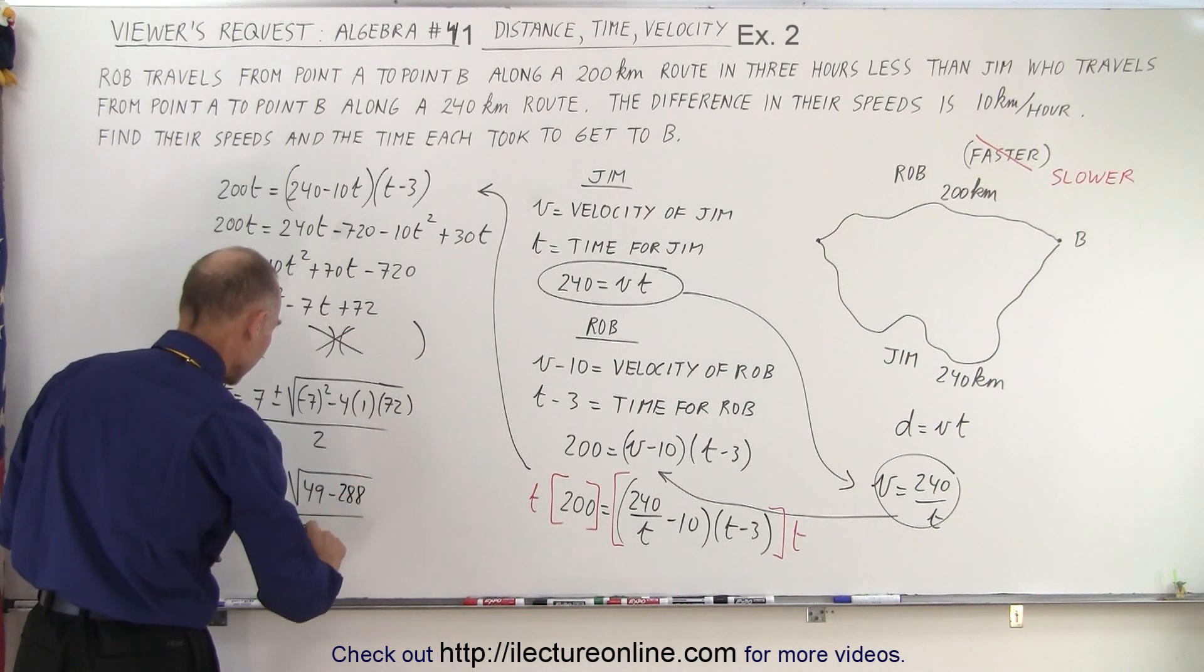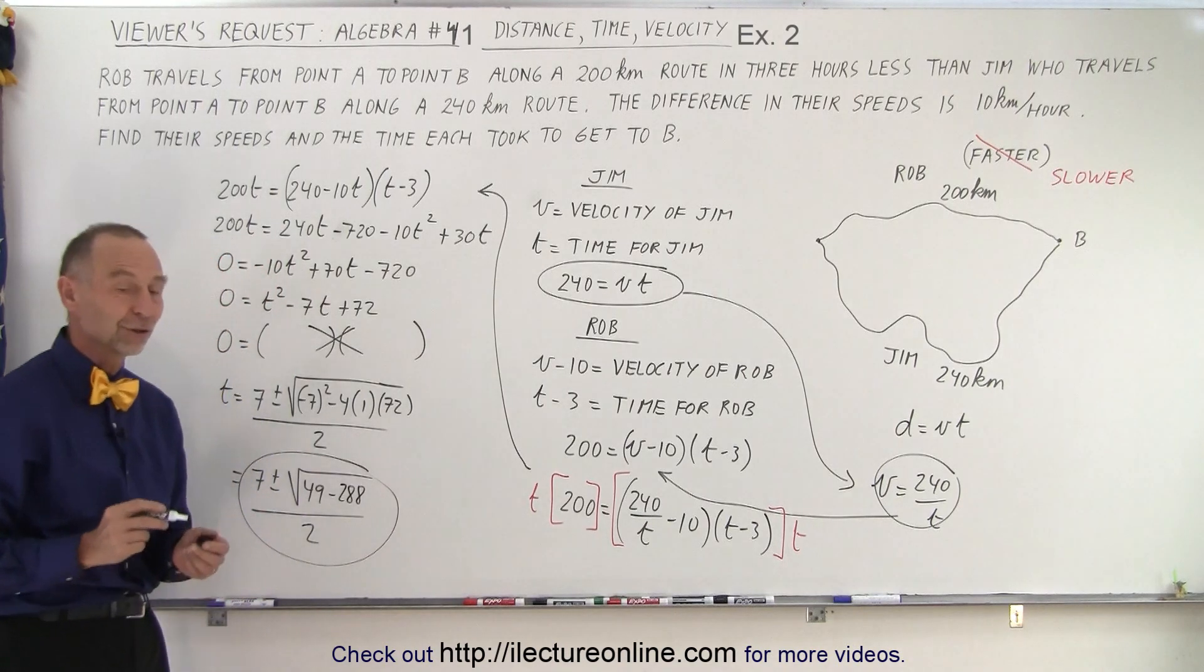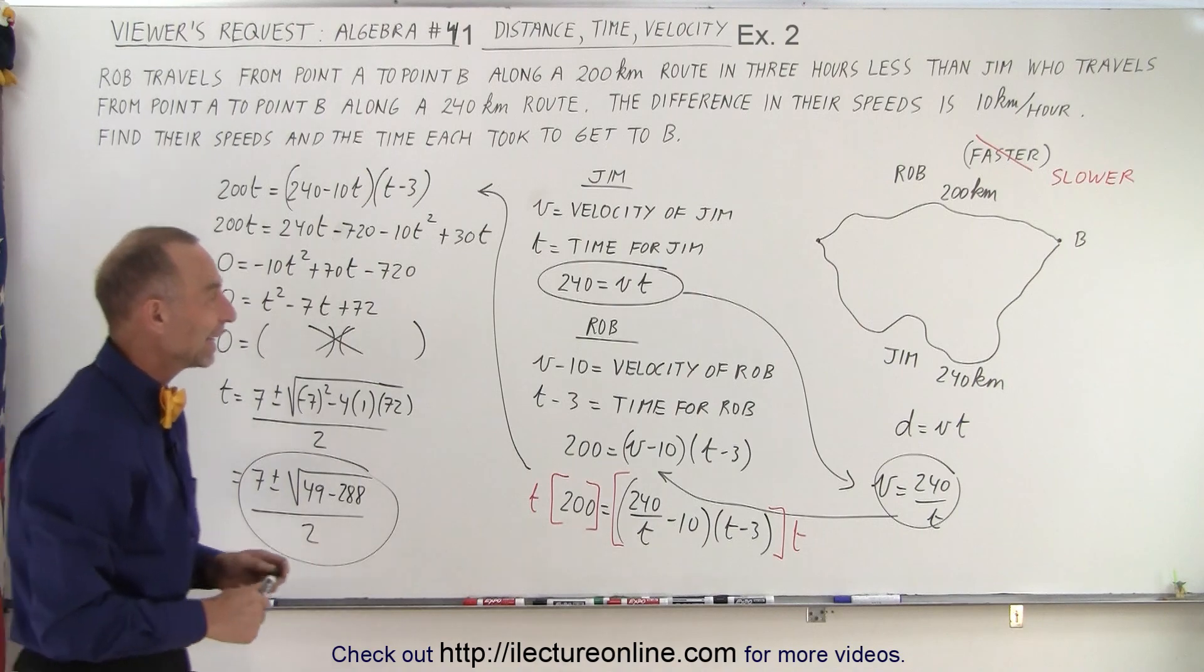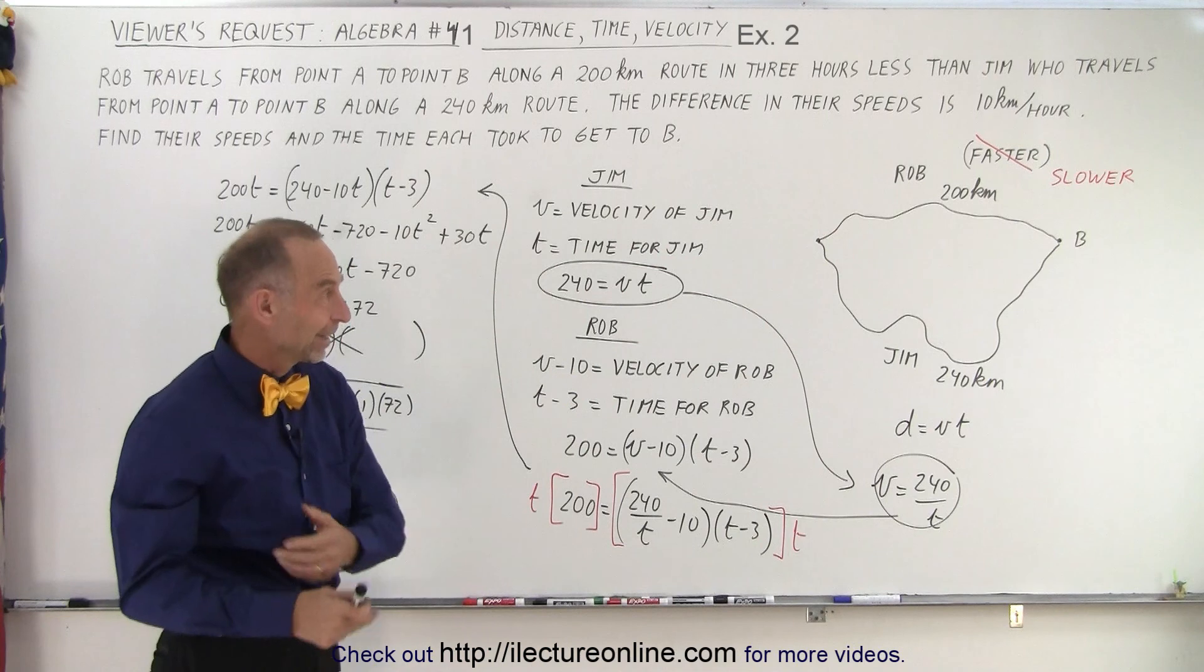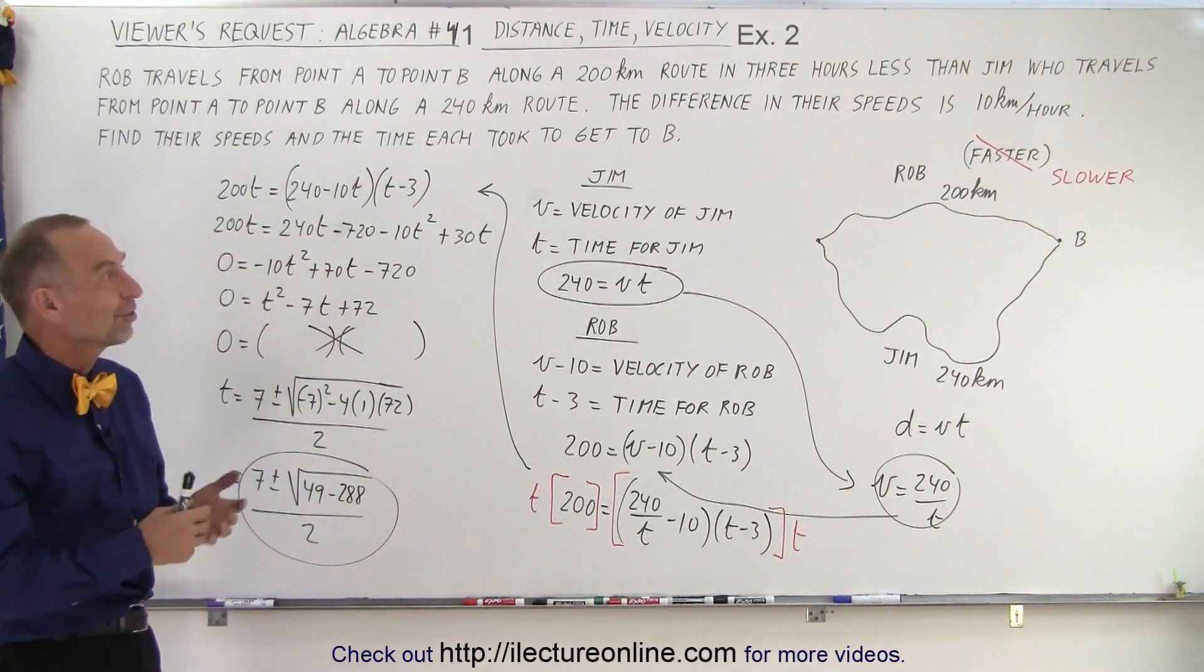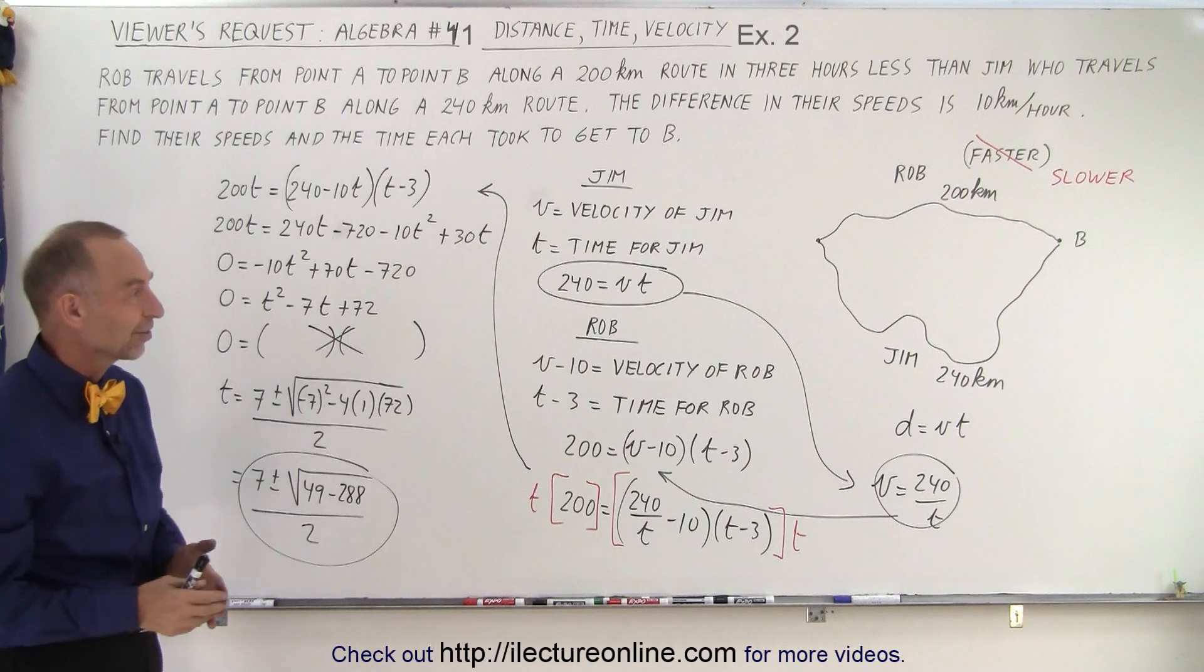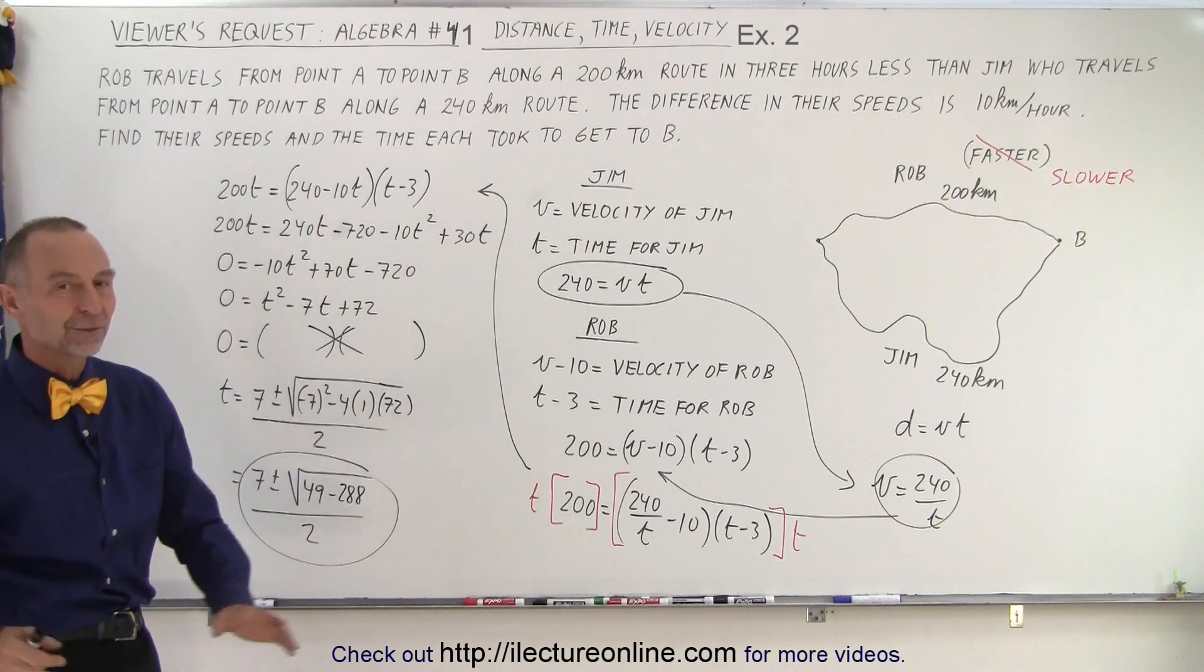And so you can see that if I make the wrong assumption, I end up with an imaginary solution. It is not possible to solve the problem if we make the wrong assumption here that Rob is slower, because it cannot work out. Rob cannot be slower and cover 200 kilometers in 3 hours less than Jim, who can then cover 240 kilometers, regardless of what their speed is.